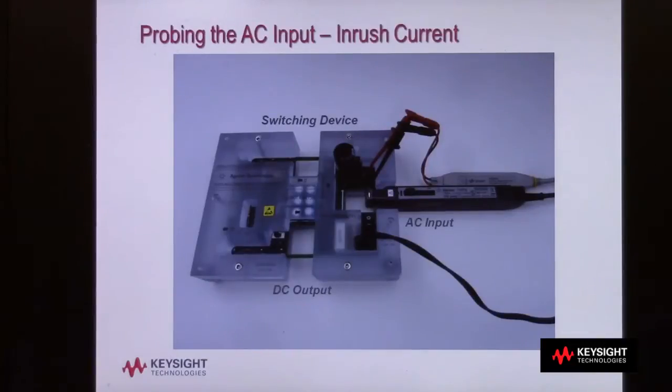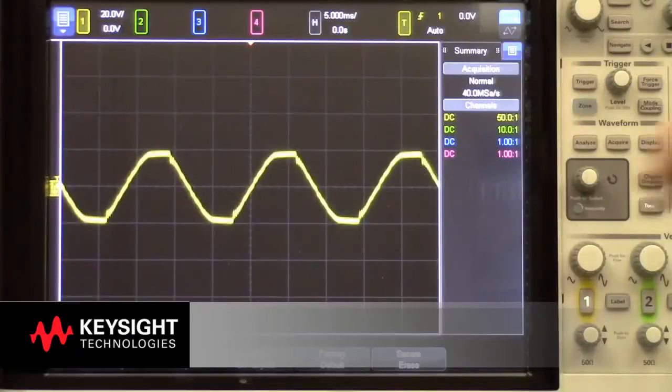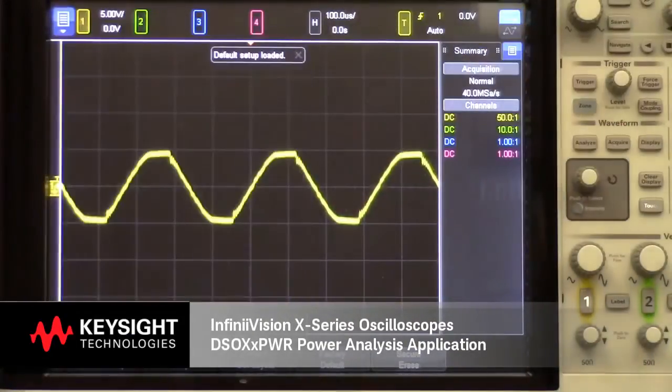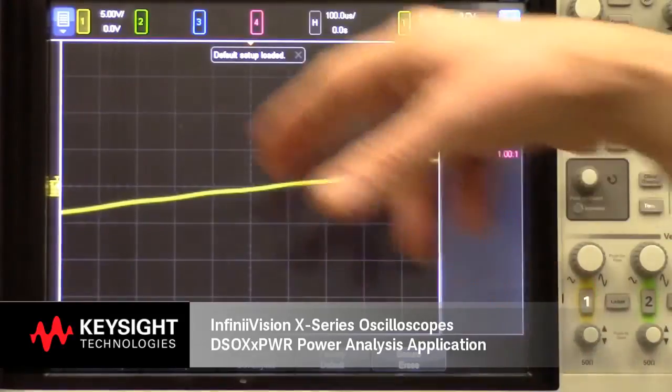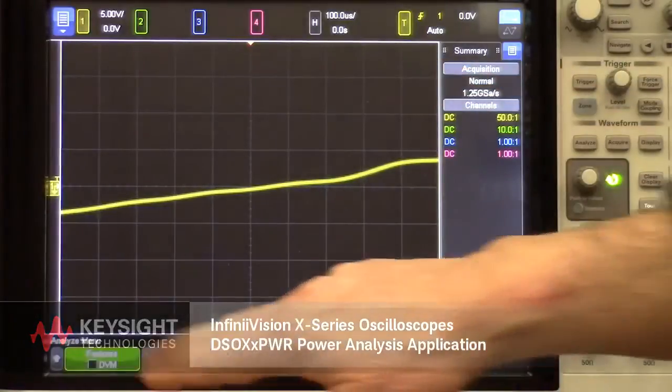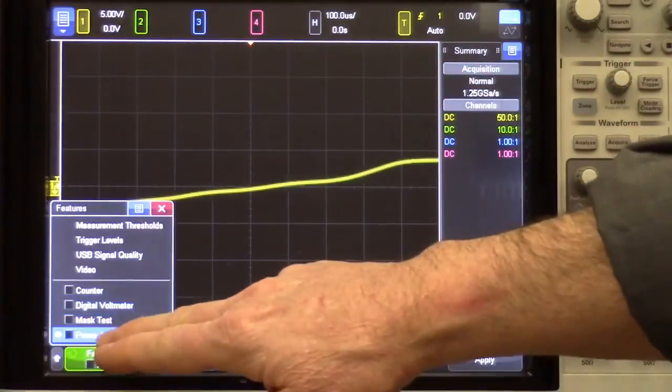Let's start making measurements. I'll begin with the default setup so that we can see everything from scratch. Next, I'll go into the Analyze menu and select the power application.